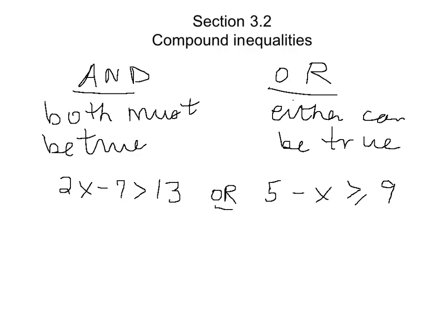So here's an example that uses the word or. And what we want to do is try to solve this, which means simplify it as much as we can. So one statement is that 2x minus 7 is greater than 13, or 5 minus x is greater than or equal to 9.